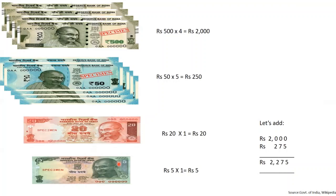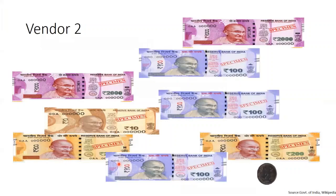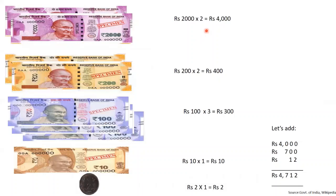Now let's see the next sample. Let's arrange these again properly to quickly calculate the total value. There are two 2000 rupee notes which gives us rupees 4000 in total. There are two 200 rupee notes which is rupees 400 in total. Three 100 rupee notes gives us rupees 300. One 10 rupee note which is 10 rupees, and a 2 rupee coin. So, 10 and 2 together gives us 12. 400 and 300 gives us 700. And when you add, the total value you obtain is rupees 4712.